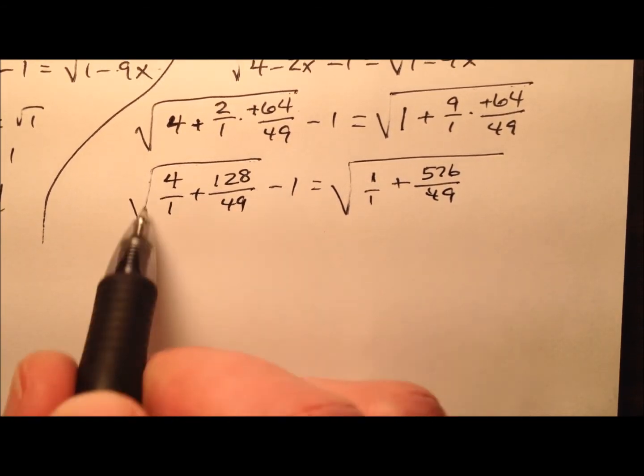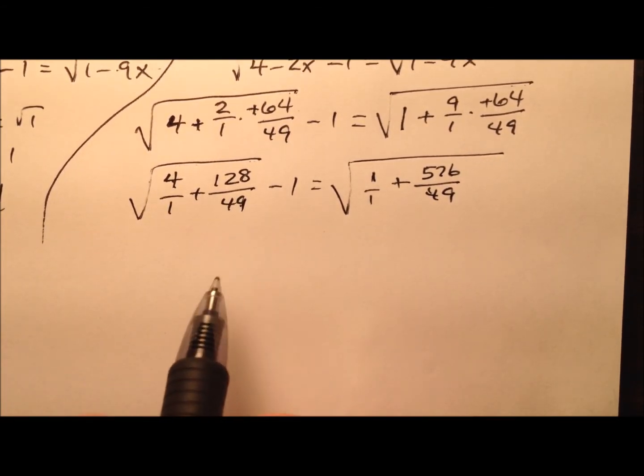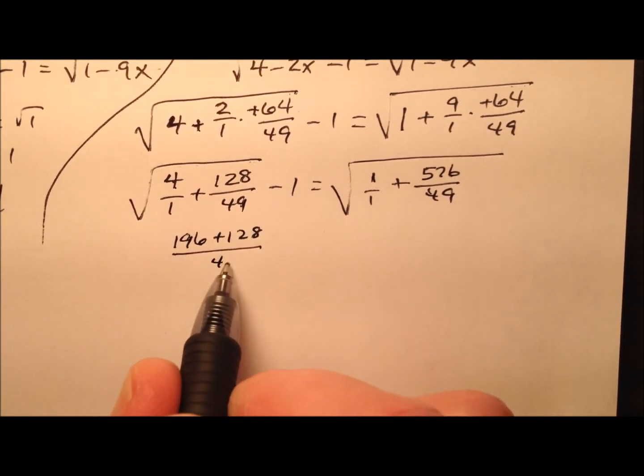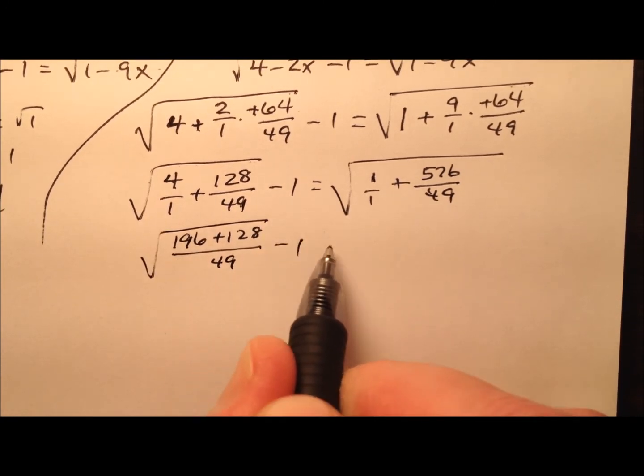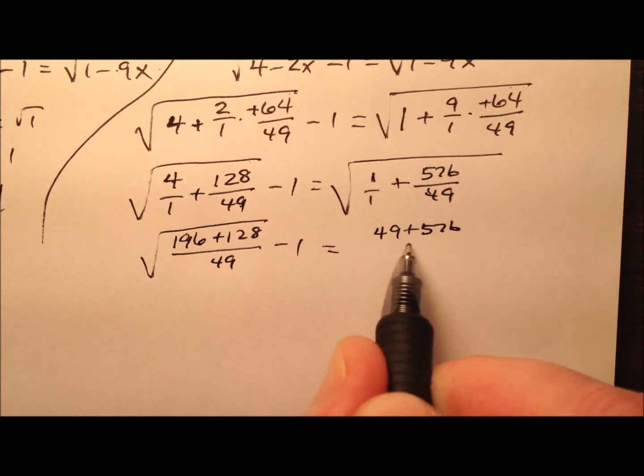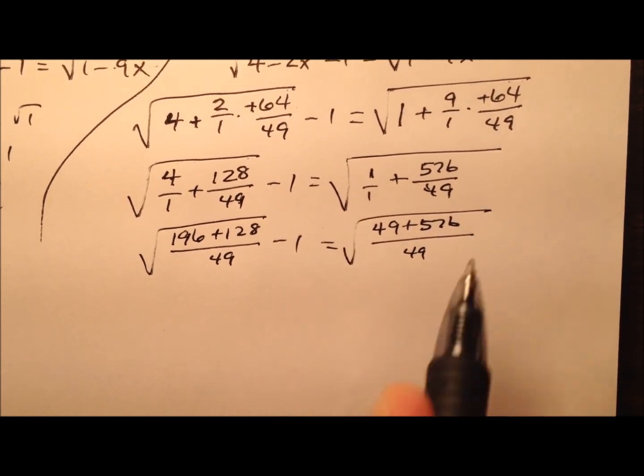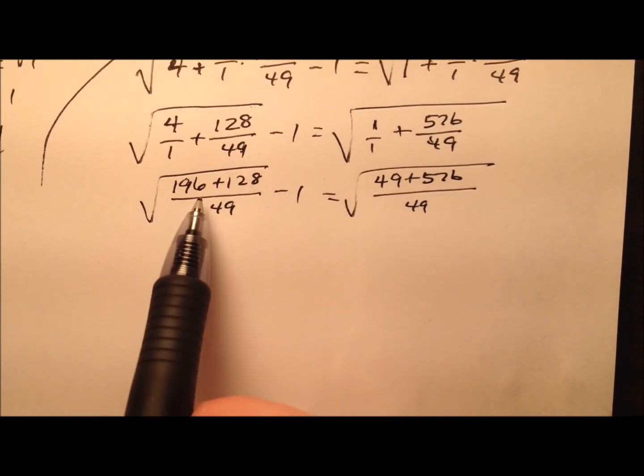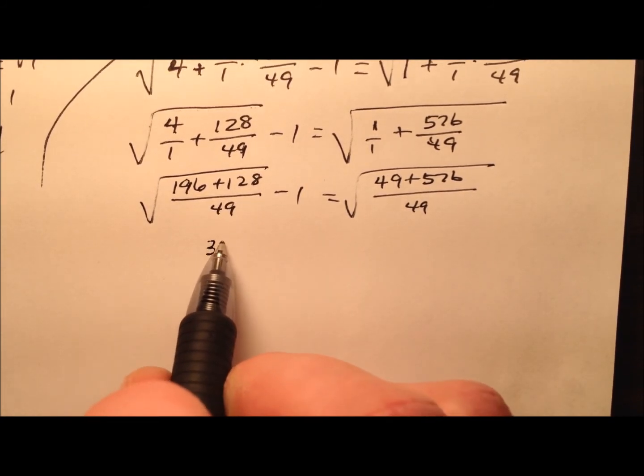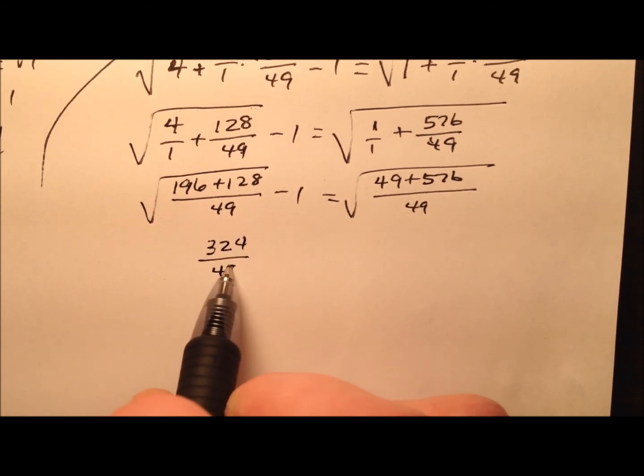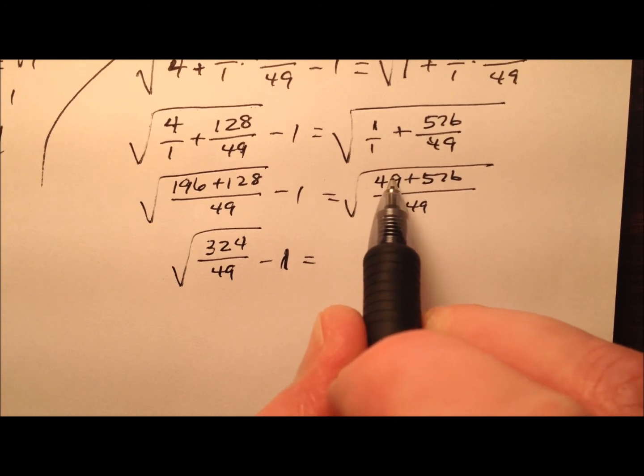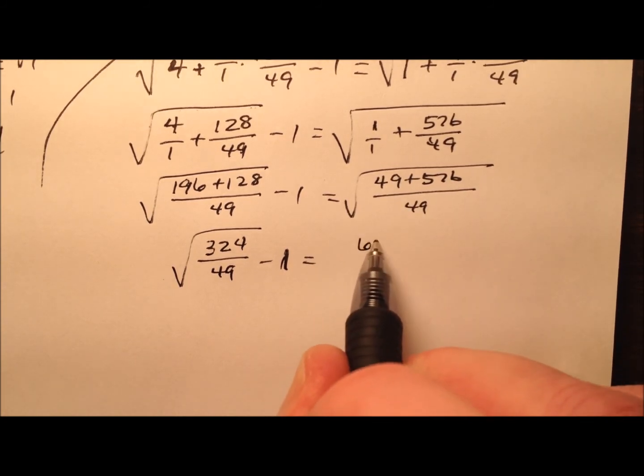Let's get common denominators for everything. So 4 times 49 is 196, so the square root of 196 plus 128 all over 49 minus 1 equals the square root of 49 plus 576 over 49. So 196 plus 128 should come out to be 324, and that is a perfect square, and 49 is a perfect square. 49 plus 576, that's 625, that's a perfect square, over that 49.